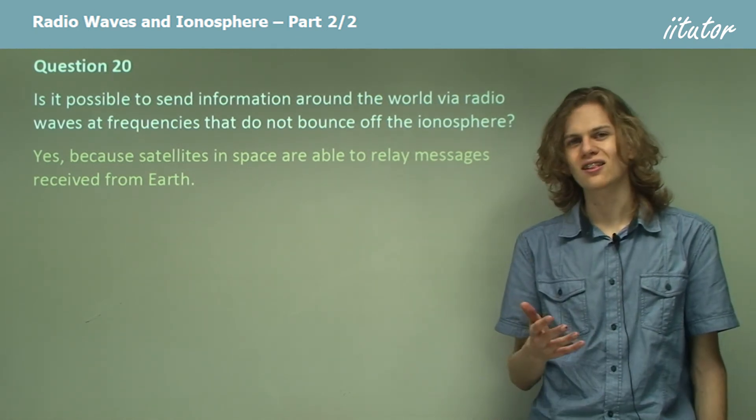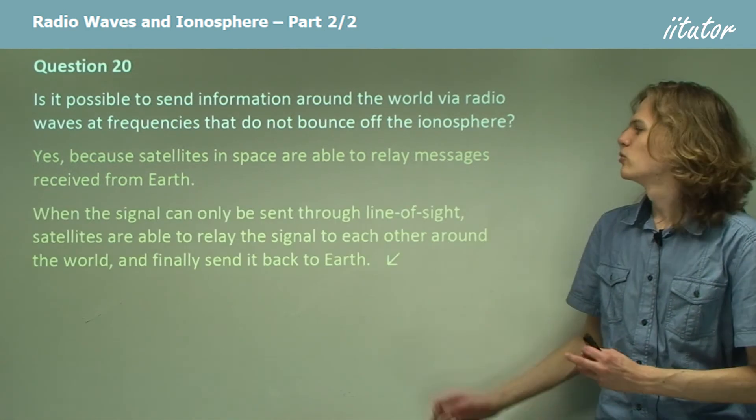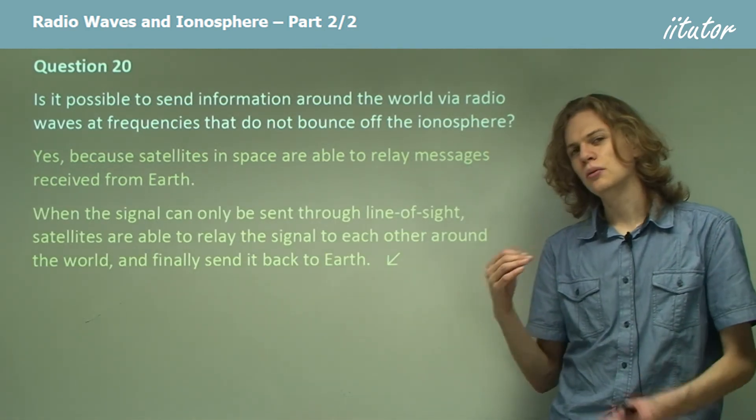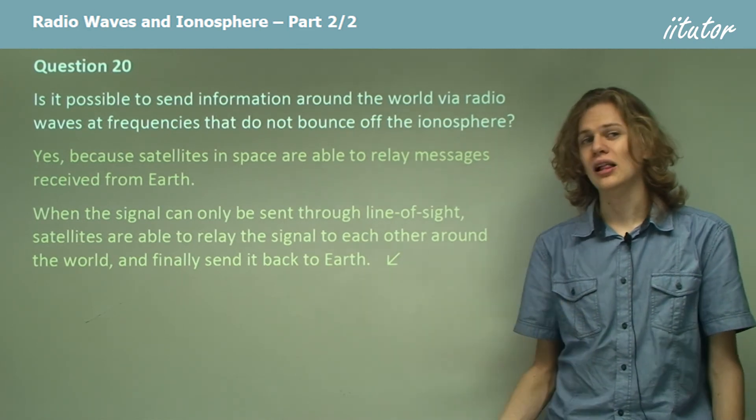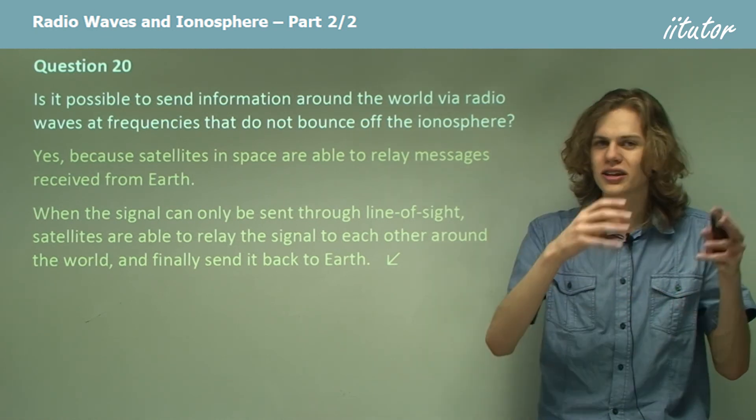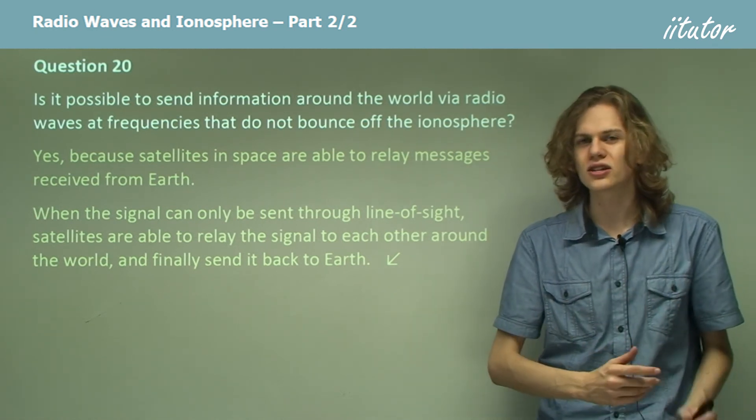So when the signal can only be sent through line of sight, the satellite is able to relay the signal. They might even relay it to another satellite until they're in a location where they can send it down to the receiving station on the ground.